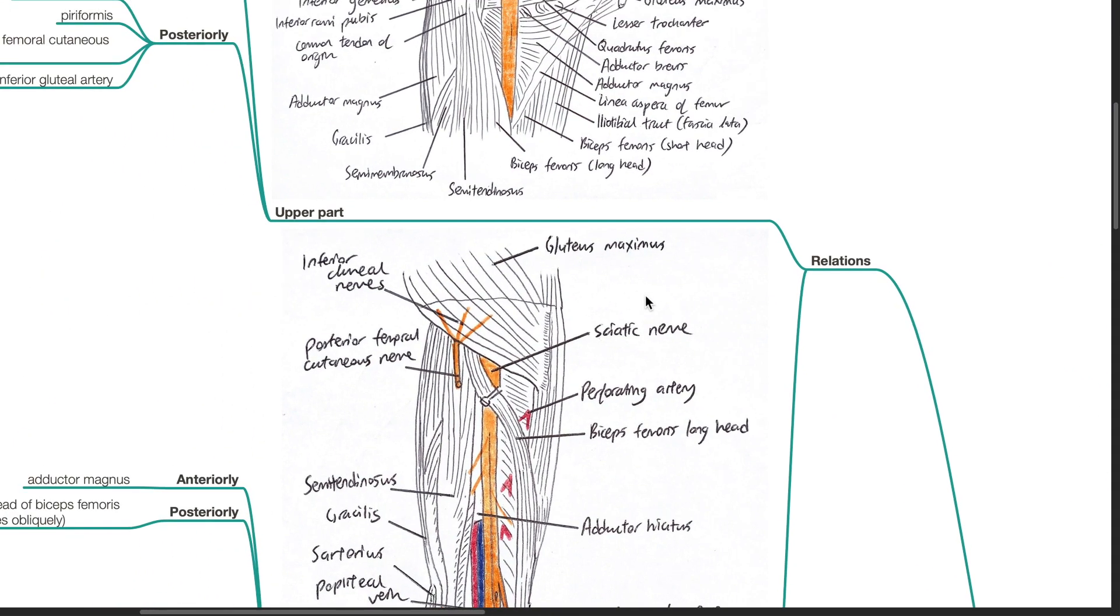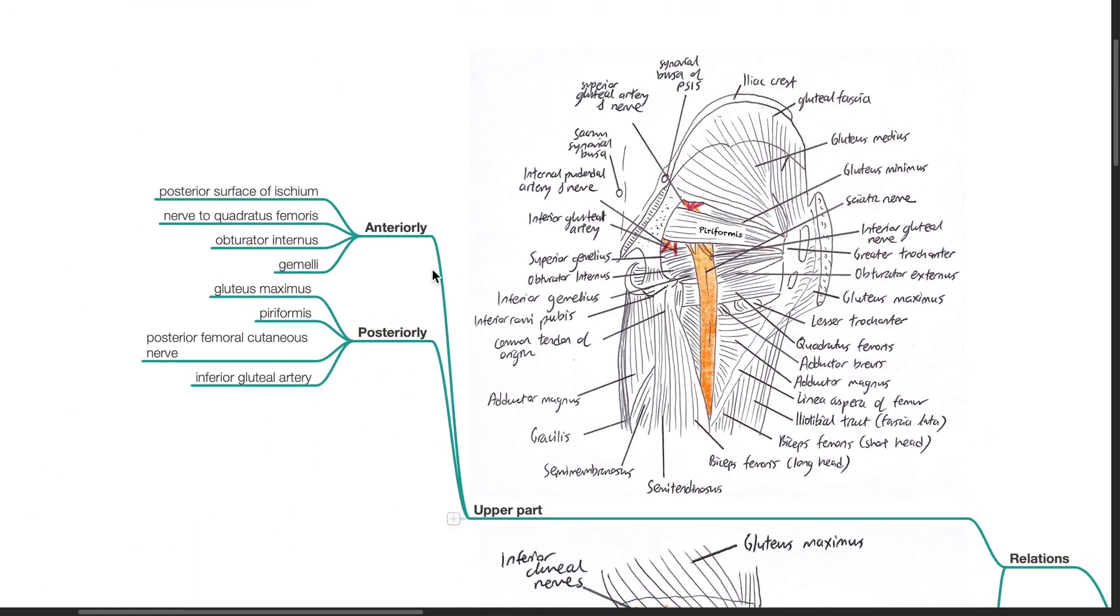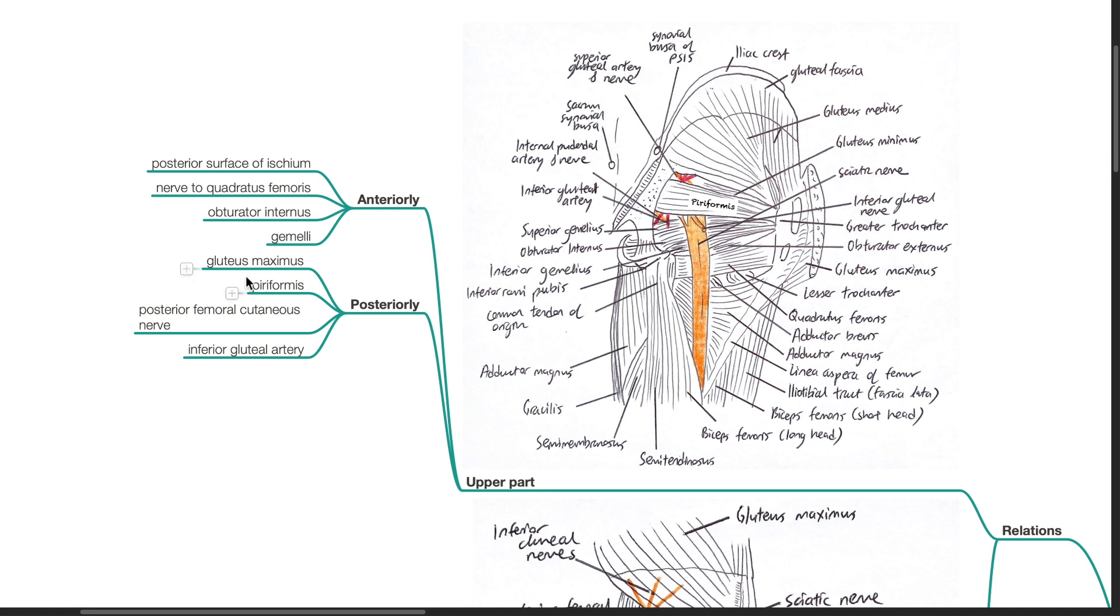Relations. Upper part. Anteriorly, the posterior surface of the ischium, nerve to the quadratus femoris, obturator internus and gameli. Posterior relations at the upper part: gluteus maximus, piriformis, posterior femoral cutaneous nerve, inferior gluteal artery.